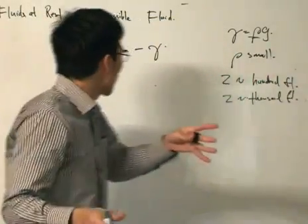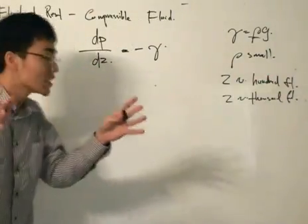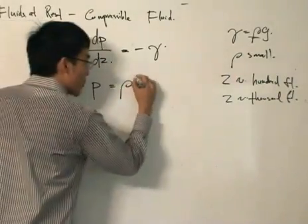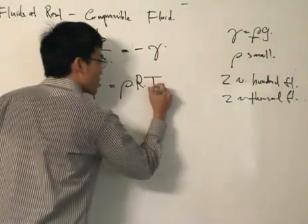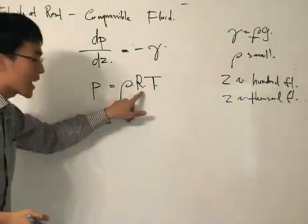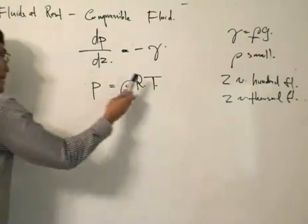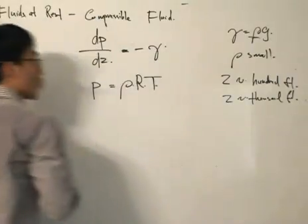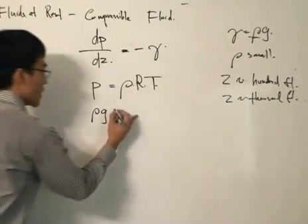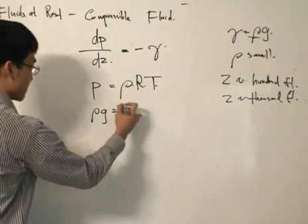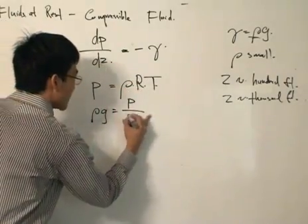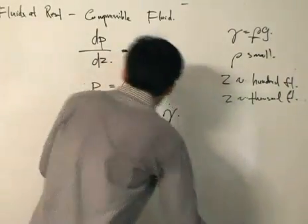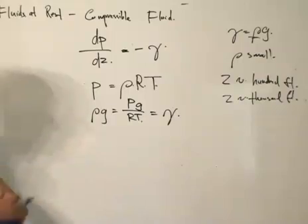There is also the perfect gas law: pressure equals density ρ multiplied by the gas constant R multiplied by temperature T. For a certain gas with a given gas constant, density, temperature, and pressure are all related by this law. We know that specific weight γ equals density times gravity, so we can rearrange to get γ = (P·g)/(RT), which gives us the specific weight accounting for density changes.